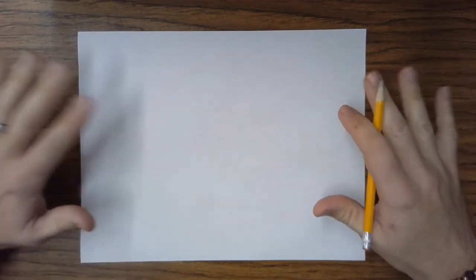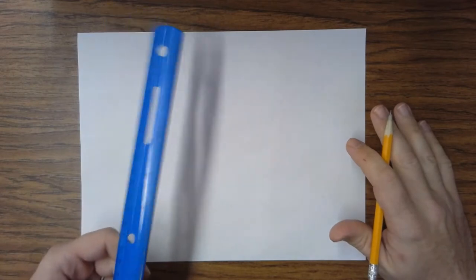Okay folks, so the first step in drawing a Paul Klee castle is to create just truckloads of boxes all over this paper. Boxes everywhere. So we're going to take our straight edge. I'm going to be using a ruler.